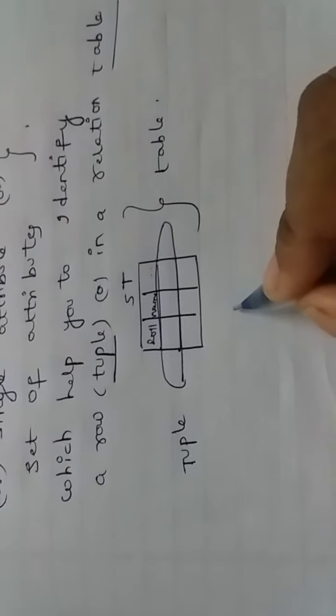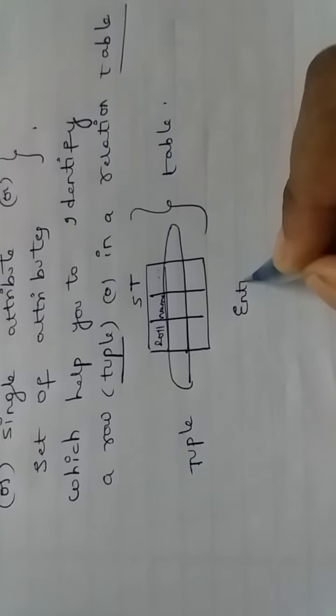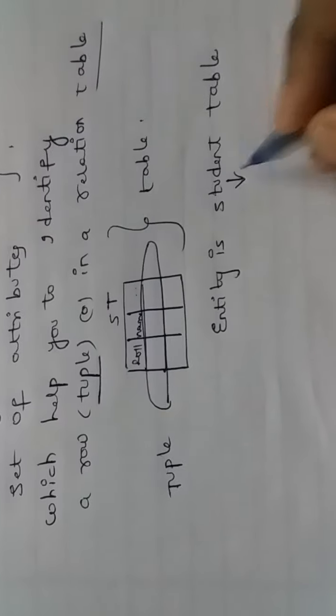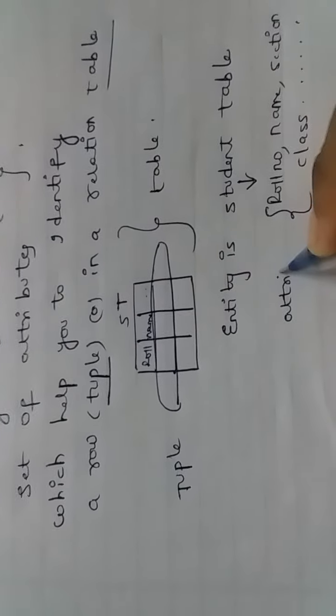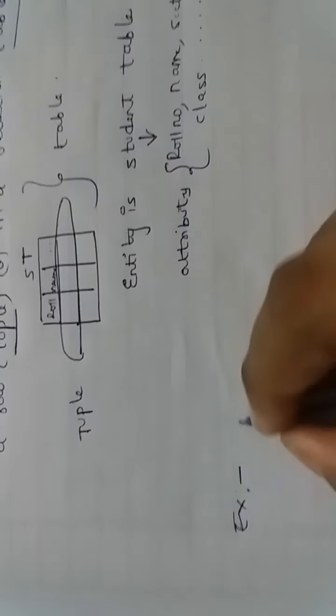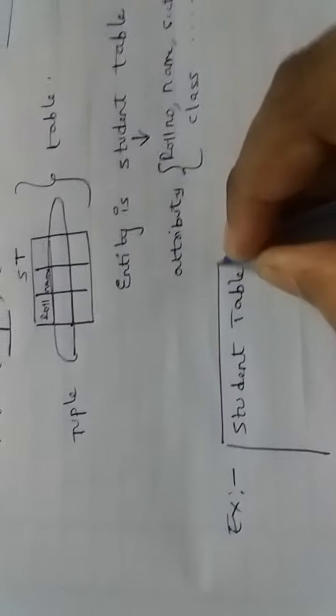The relation table contains not only a single attribute. What is meant by attribute and entity? For example, the entity is the student table. The student table contains roll number, name, section, class, and so on. These fields are called attributes.